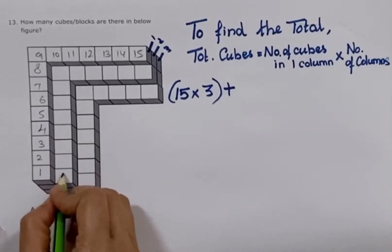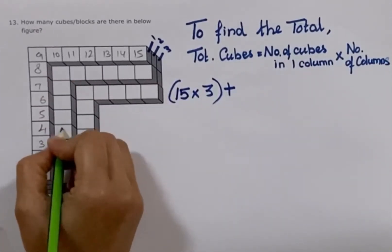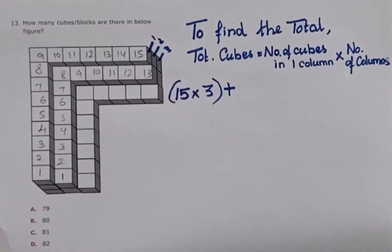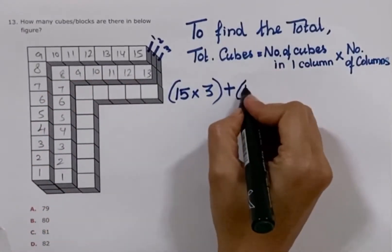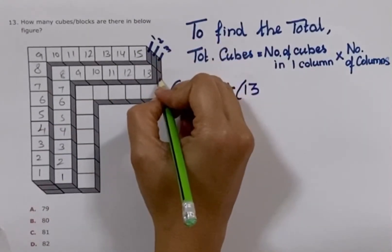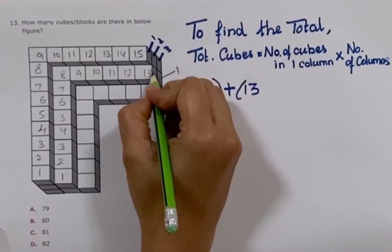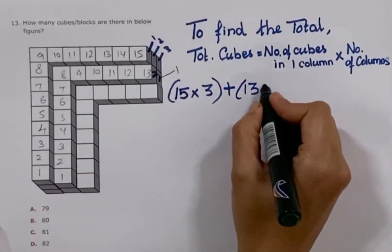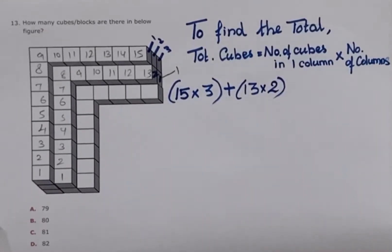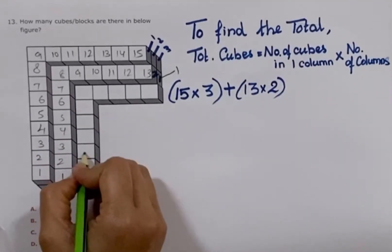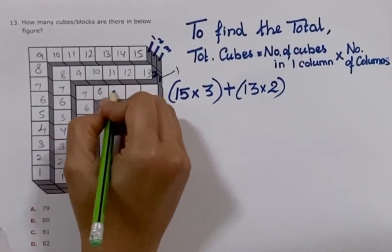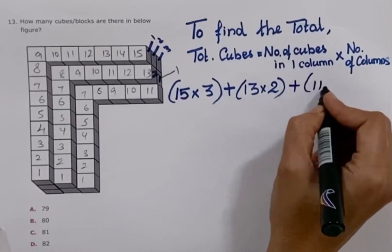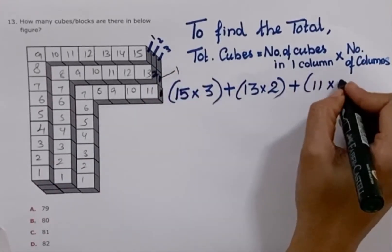Now let's see this next column: 1, 2, 3, 4, 5, 6, 7, 8, 9, 10, 11, 12, 13 — so 13 cubes. How many columns? 1, and here 2 — so 2 columns with 13 cubes. Next column has 11 cubes with only 1 column.